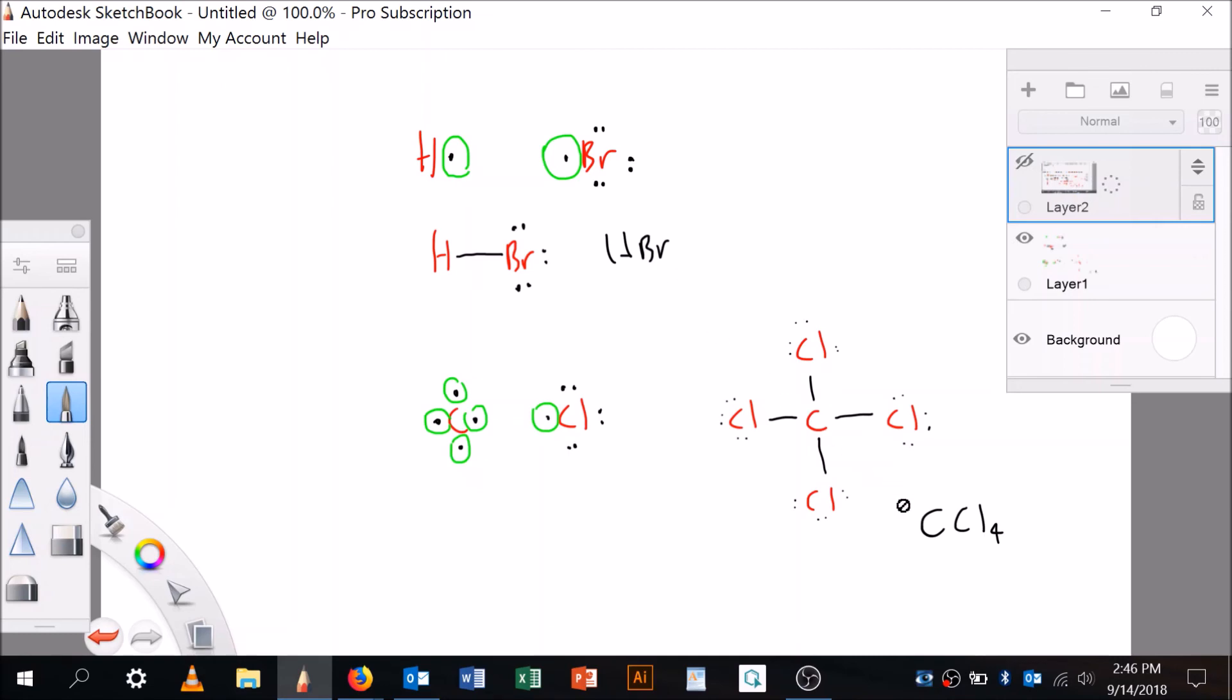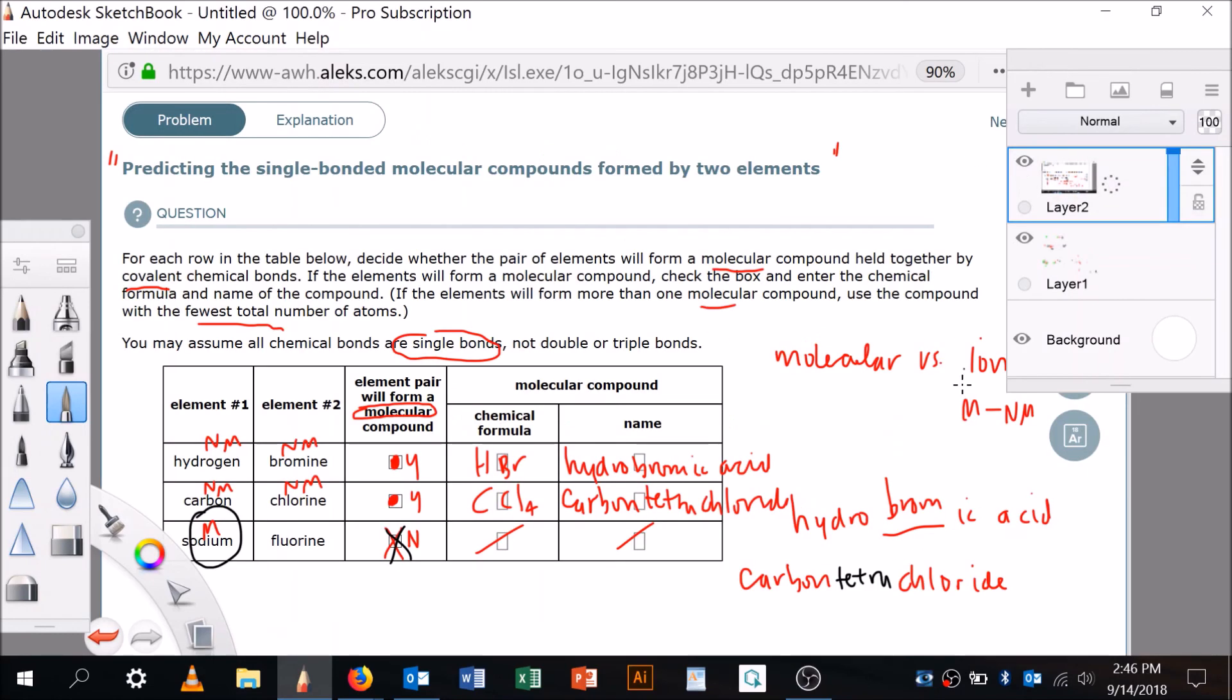And so we came up with the chemical formulas by deciding with their valence electrons how many bonds they wanted. Right? All right, so I hope that's helpful. And we will look forward to talking to you more about it soon.